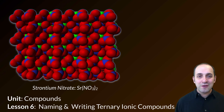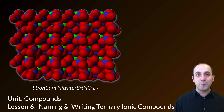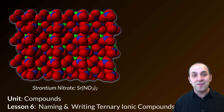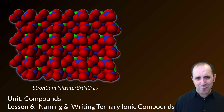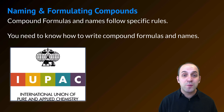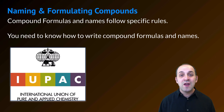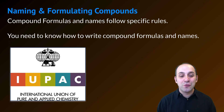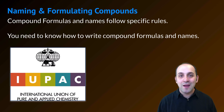Our example ternary compound that you can see here is strontium nitrate, which has the formula Sr(NO3)2. Let's talk about how that was figured out. Remember that compound formulas and names follow specific rules, and that these rules are set up by the International Union of Pure and Applied Chemistry, IUPAC.